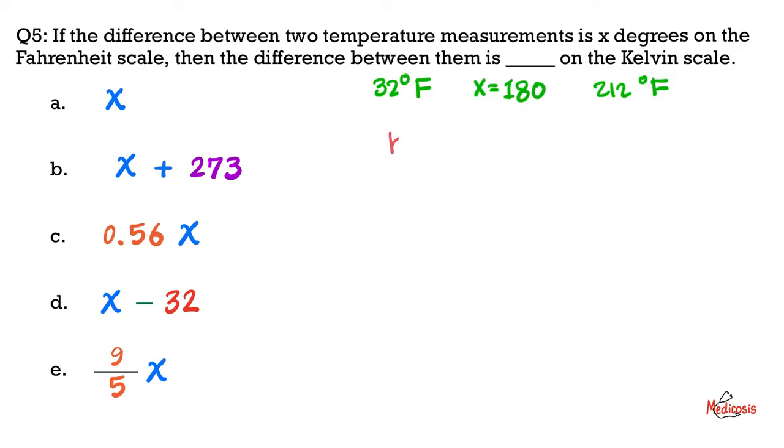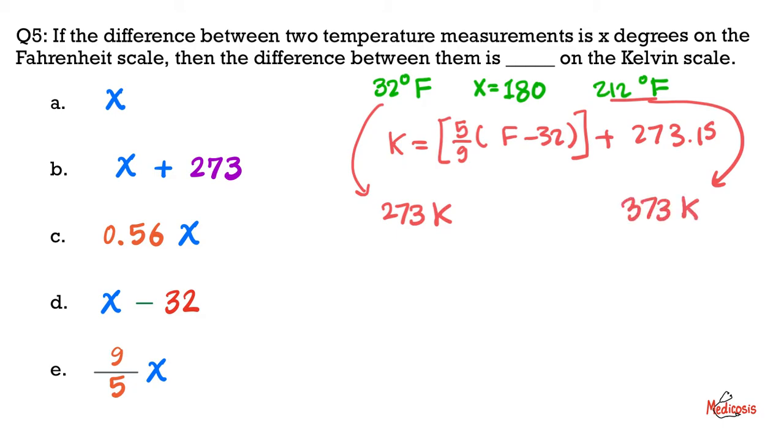When you convert the 32 degrees Fahrenheit, it becomes 273 Kelvin. When you convert 212 to Kelvin, you get 373 degrees Kelvin.